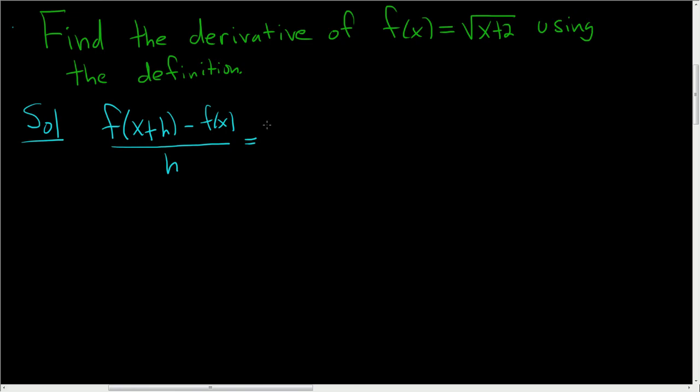So f of x plus h, that's just the square root of x plus h plus 2, and f of x is just the square root of x plus 2. This is all divided by h, and at some point we have to take the limit and let h approach 0, and as you can see, that would fail horribly here because we would get division by 0.